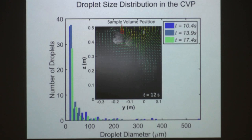We were able to look at those droplet sizes within this counter-rotating vortex pair through the second position of our mini holocam. Here's our sample measurement volume — we're measuring right in the center of this vortex — and here are the data for three different time points. The earliest time point is in blue, and you can see droplets that extend all the way up to about half a millimeter in size.